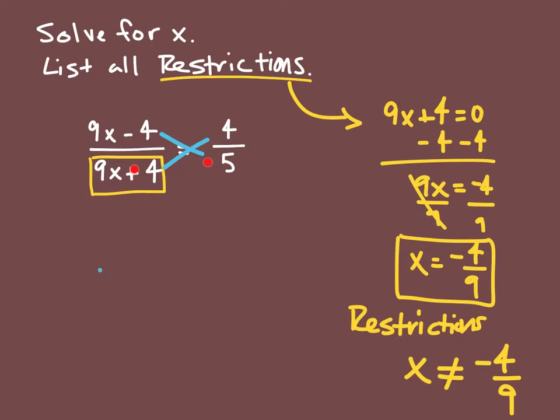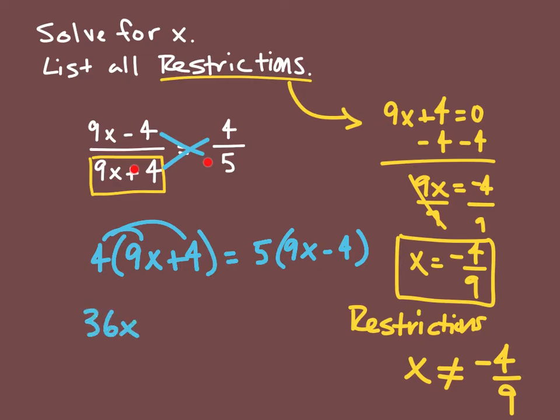So I'm going to do four times nine x plus four, set that equal to five times nine x minus four. From here, let's clear our parentheses by distributing. I'm going to distribute that four: four times nine x is 36x, four times four is 16.